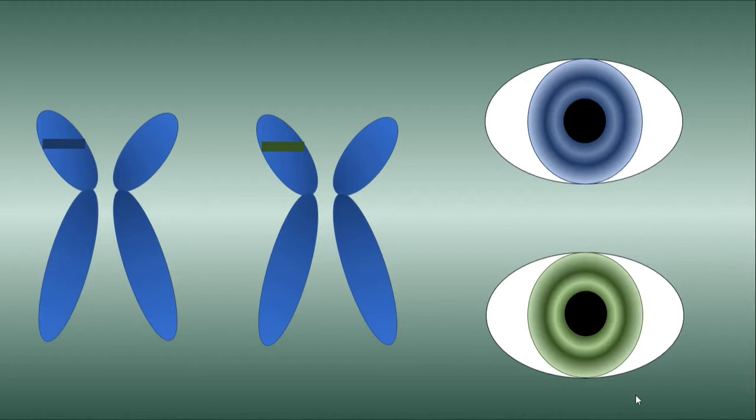Humans are diploid, meaning that they have two sets of chromosomes. You get one set from your mother and one set from your father.